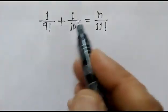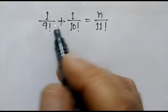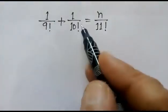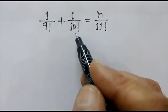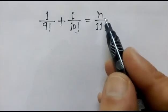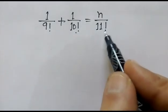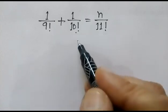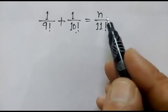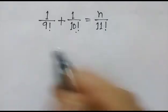Hi friends, today we have a nice equation: 1 over factorial 9 plus 1 over factorial 10 is equal to n over factorial 11. We have to find out the value of n.